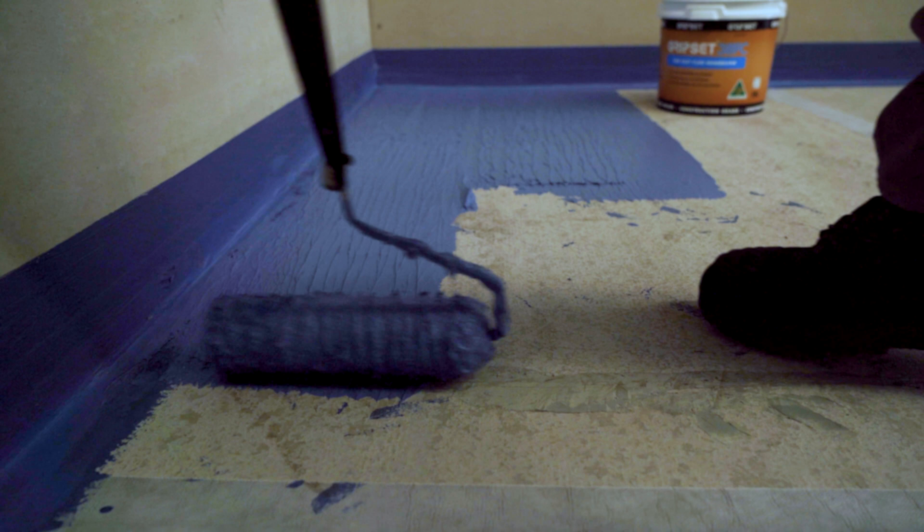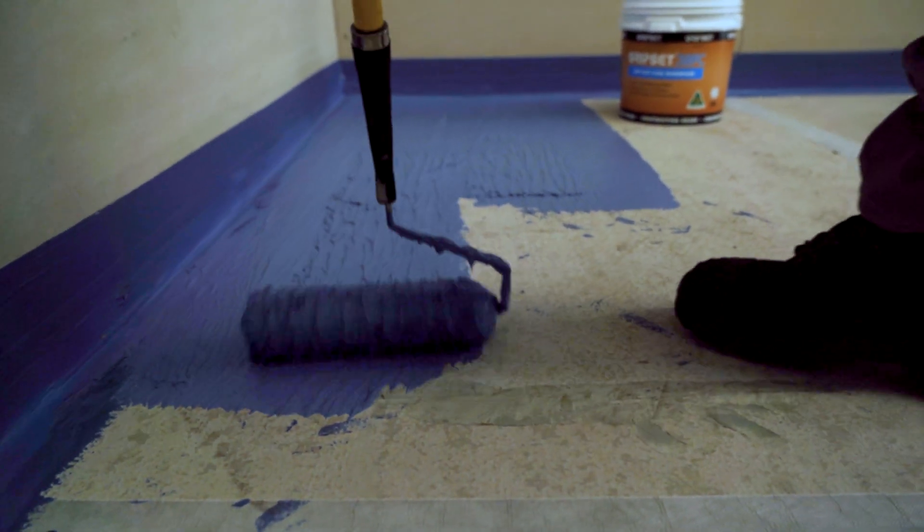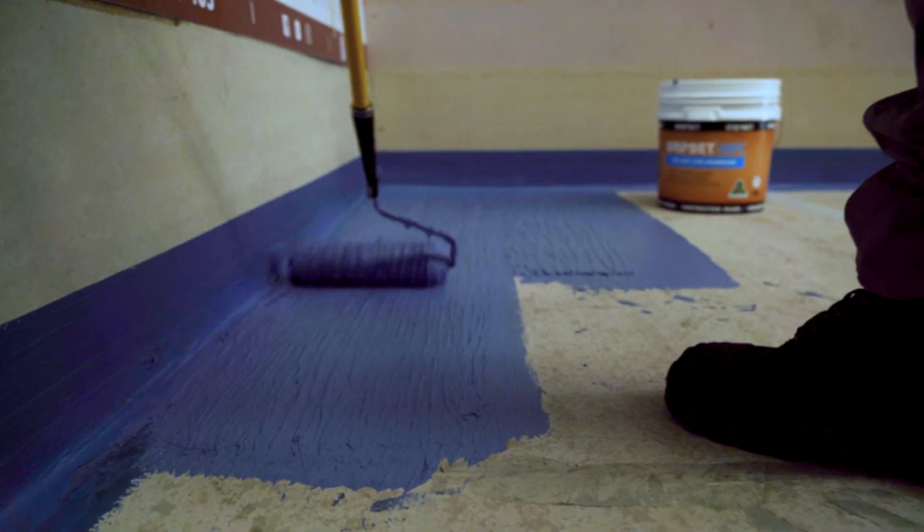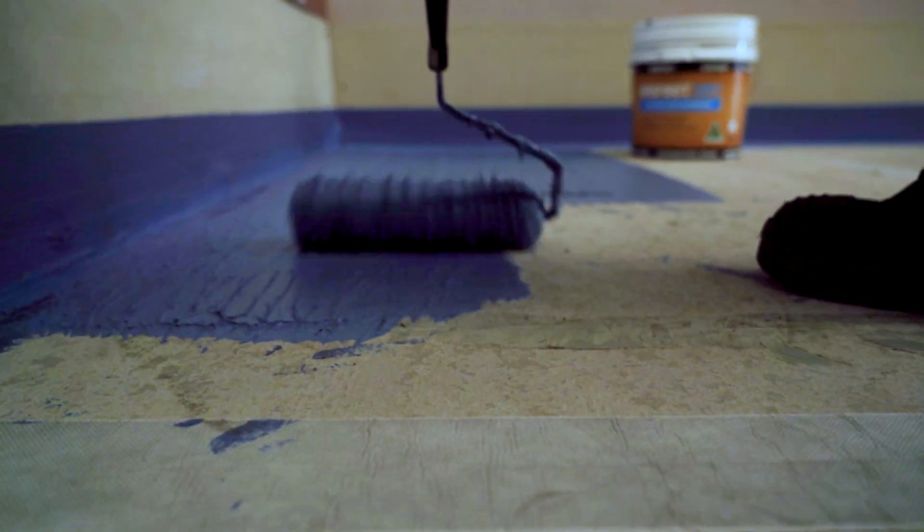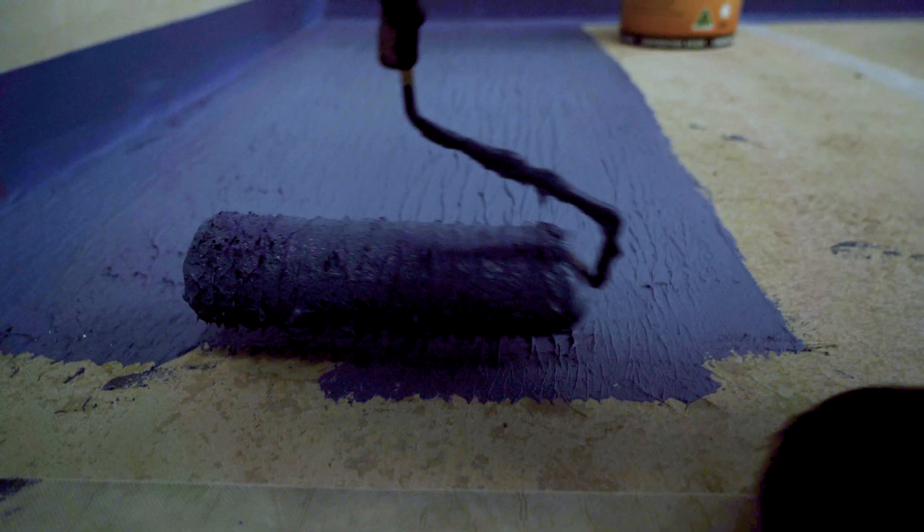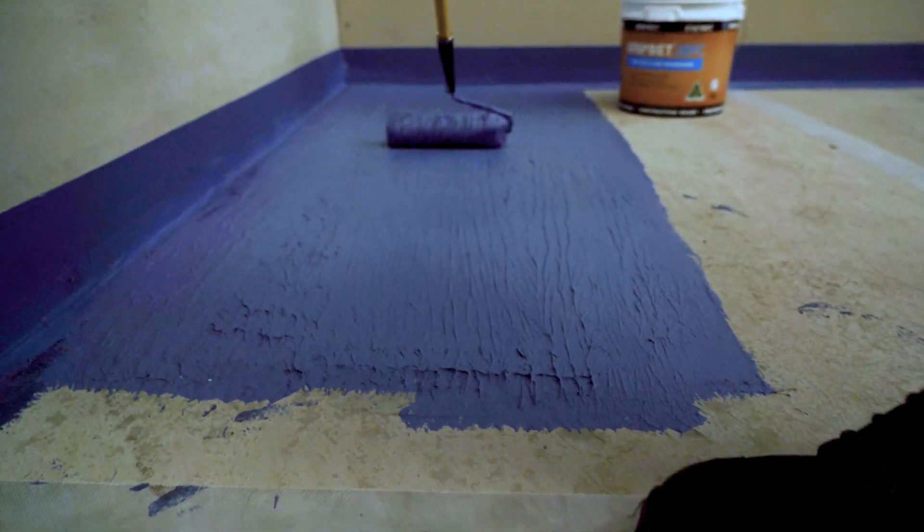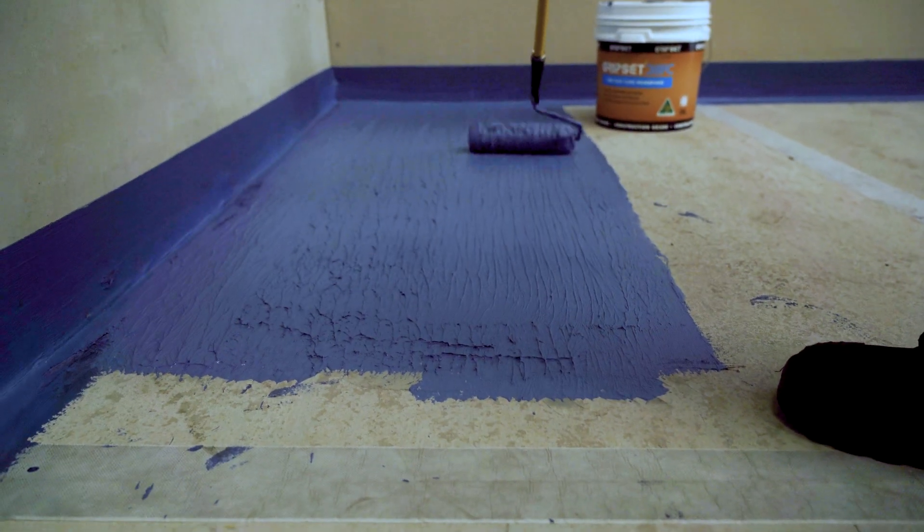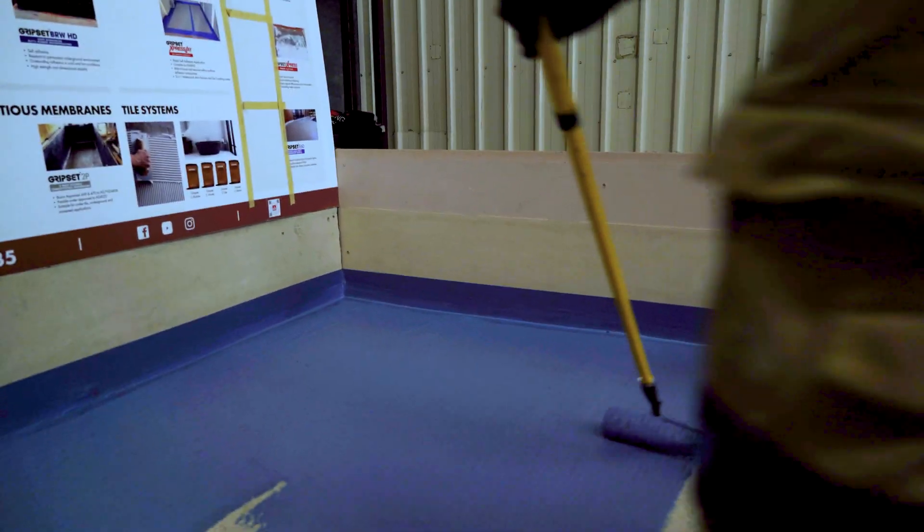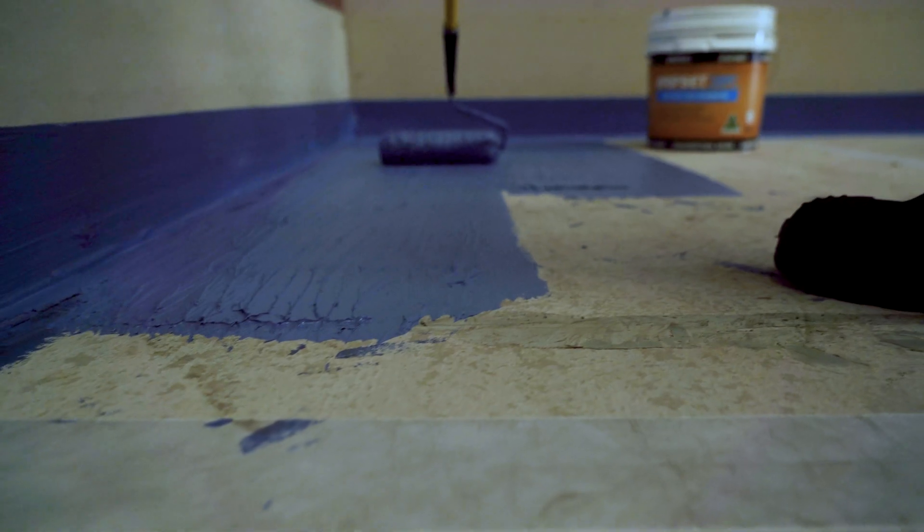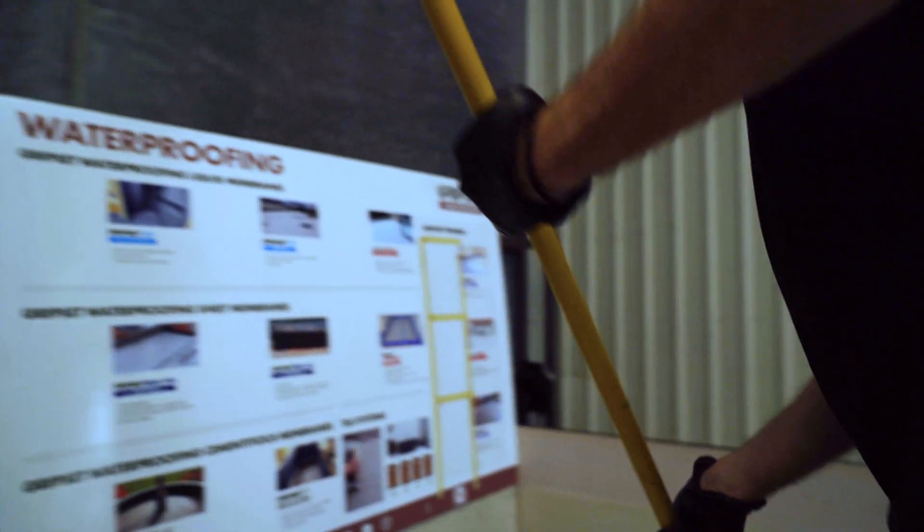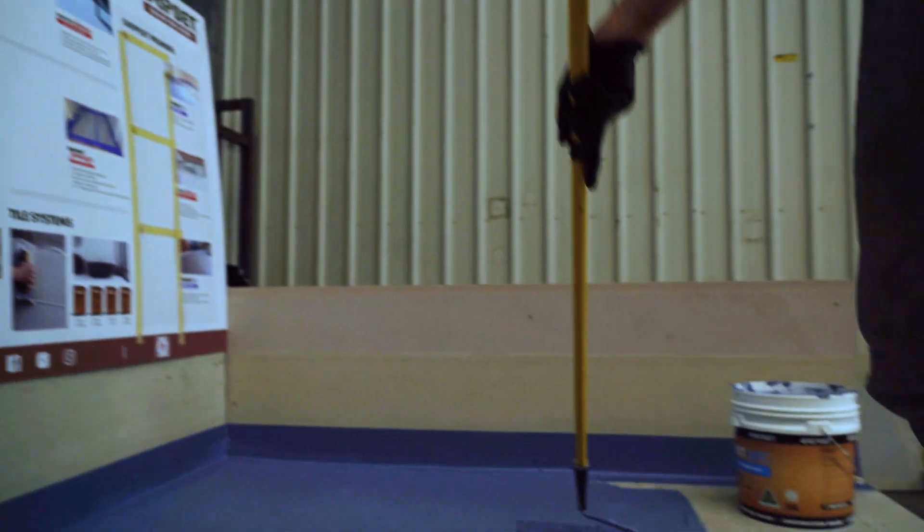The coverage rate simply refers to the recommended amount of product to be applied for a given application. For liquid membranes the coverage rate will typically be expressed in liters per square meter or for liquid cementitious membranes it might be in kilograms per meter squared per millimeter of thickness. It'll typically specify the minimum amount of coats to apply, how thick the wet coat needs to be and also the overall dry film thickness.